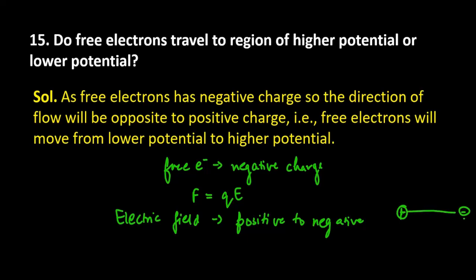It will be outwards from positive and negative, so it is flowing from positive to negative. Now think about the direction of travel of electrons in this case. The electrons will move from this side to this because we have electron as a negative charge.